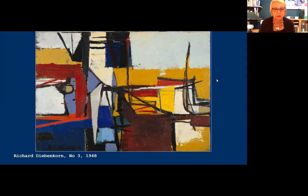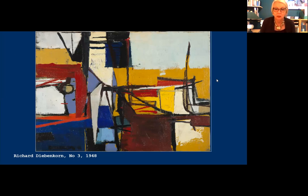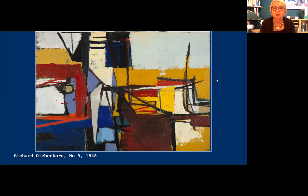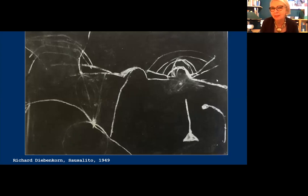After the war, Diebenkorn returned to San Francisco, studying and teaching at the Art Institute, painting in the requisite abstract manner. He seems already to be sensitive to landscape. He was living in Sausalito at the time, driving across the Golden Gate Bridge every day. So in this severe abstraction, can you see what he saw on his daily drive? I think you can.